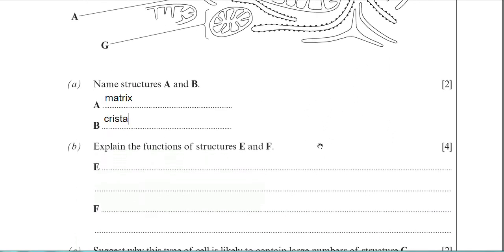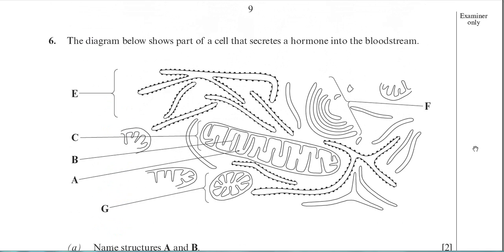Moving on now, part B. Explain the functions of structures E and F. So let's scroll up and have a look at E and F. You need to identify these structures. You need to know what they are before you can state their functions. So E is the rough endoplasmic reticulum because the black dots on the surface there are the ribosomes. And F is actually the Golgi body because the Golgi body is a stack of flattened sacs called cisternae. You can quite clearly see there all these flattened sacs stacked on top of each other.